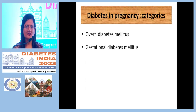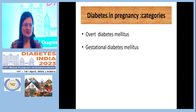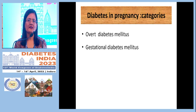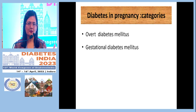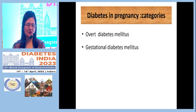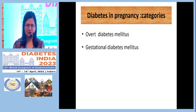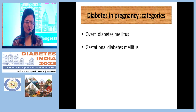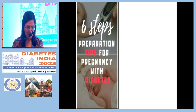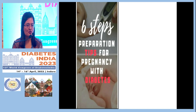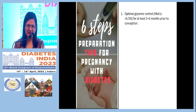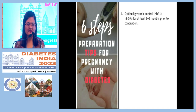Diabetes in pregnancy could be either overt diabetes mellitus, where the patient already had diabetes — whether type 1 or type 2 — or gestational diabetes mellitus, where the patient did not have diabetes prior to pregnancy but developed it during pregnancy.